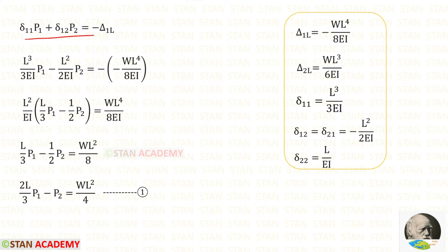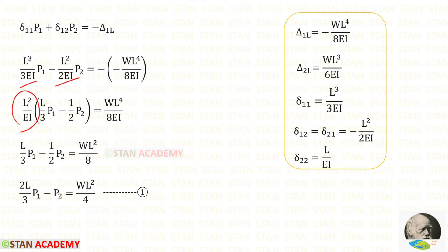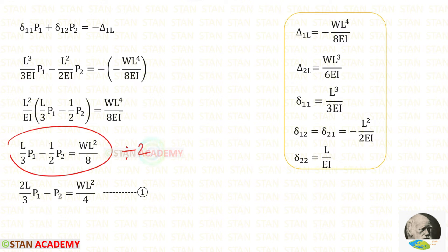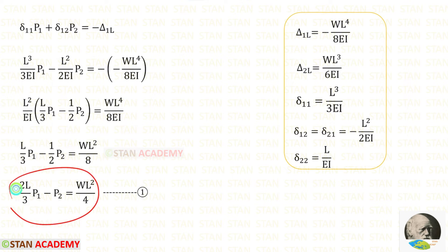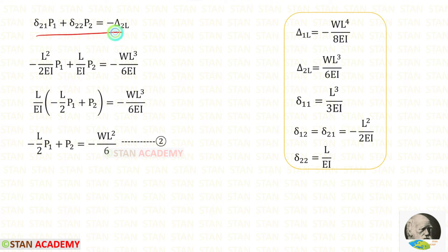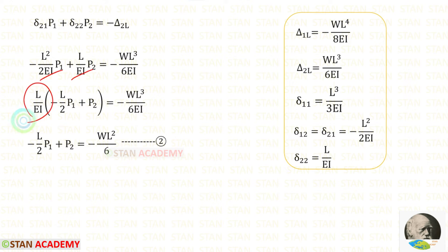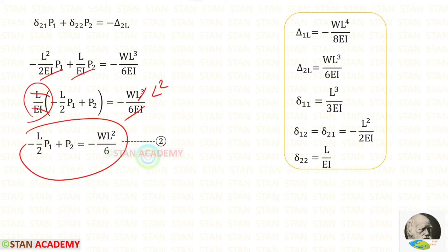In the first equation, let us apply the values of delta 1L, delta 11, and delta 12. Negative into negative gives positive. From both terms we can take L² upon EI outside, then eliminate EI and L². Dividing the equation by 2 gives us Equation 1. In the second equation, let us apply the values of delta 2L, delta 21, and delta 22. Taking L upon EI outside and eliminating EI and L gives us Equation 2.